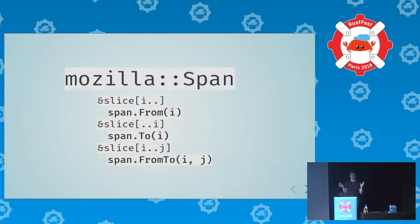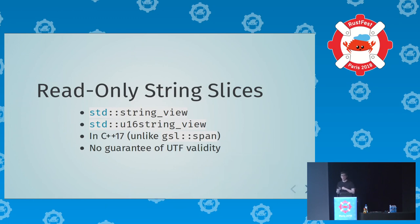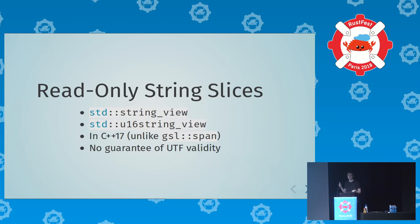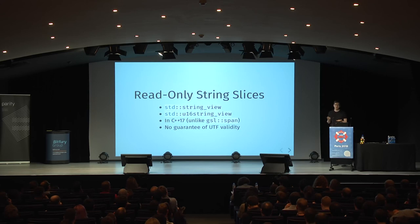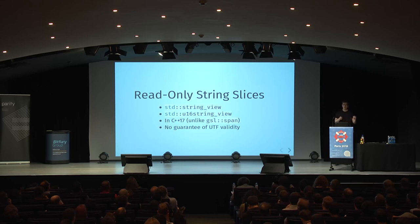Since we have our own versions of all of these in Mozilla code, we get to fix design issues like that. You should be aware that in C++, read-only string slices are a special case called std::string_view or, in the UTF-16 case, std::u16string_view, which are already in the standard library unlike span, which you need from GSL. If you use the C++ standard library, you should just be using those.